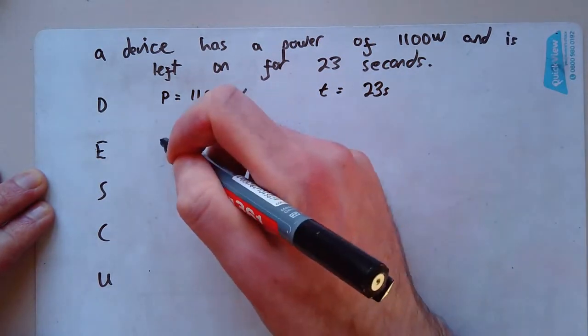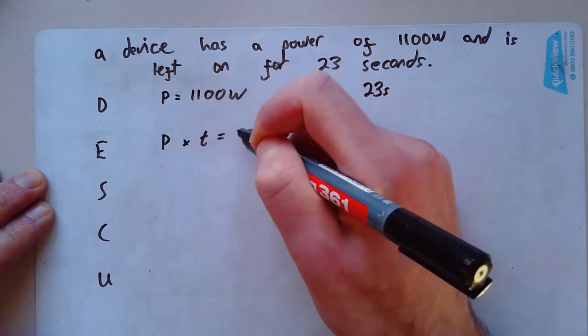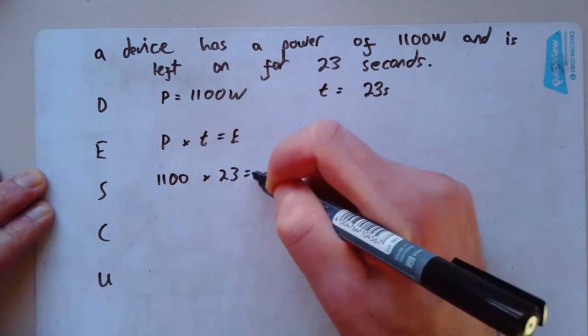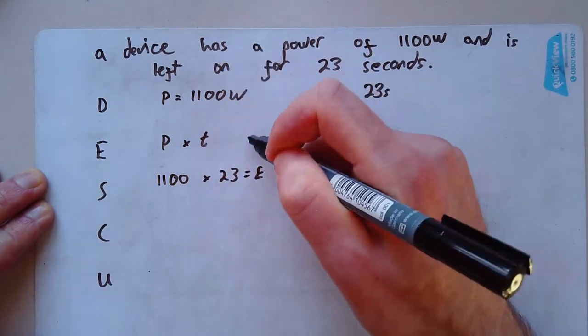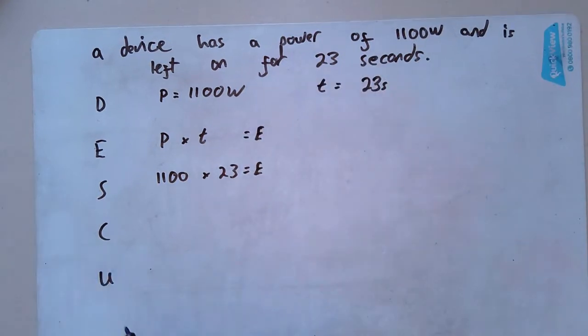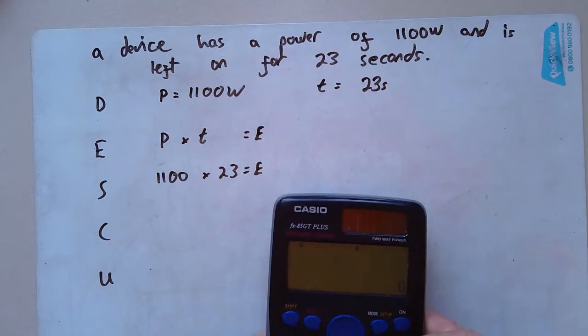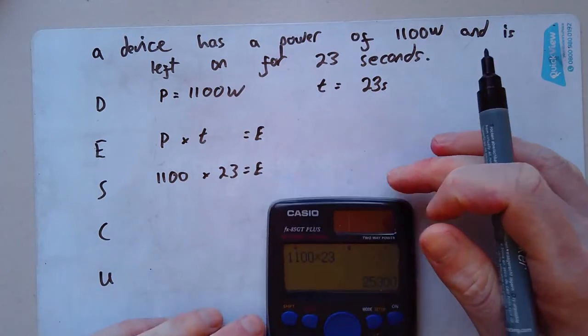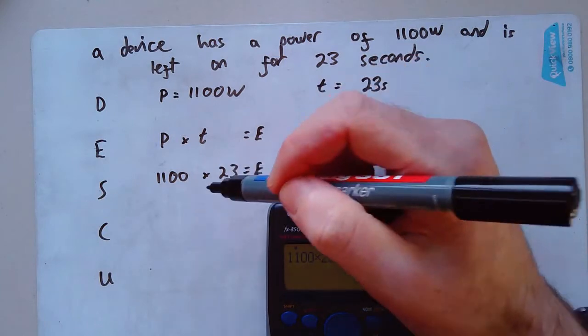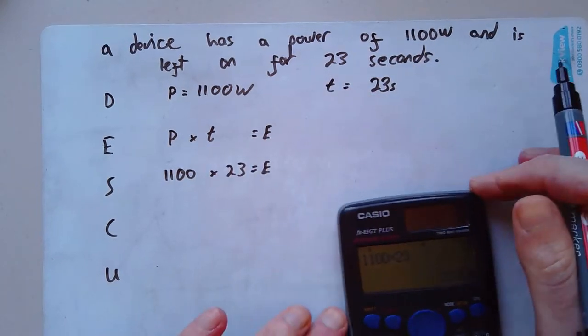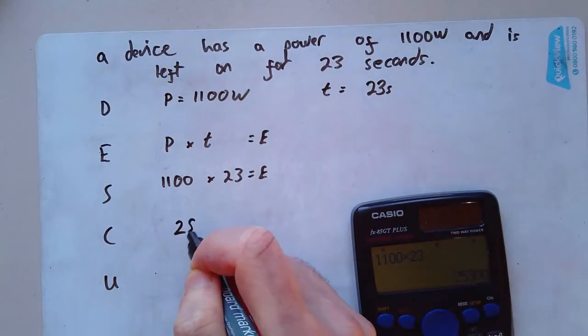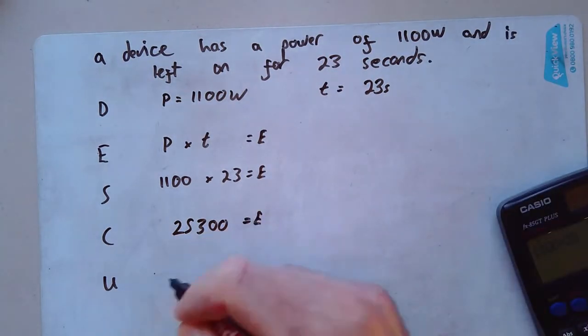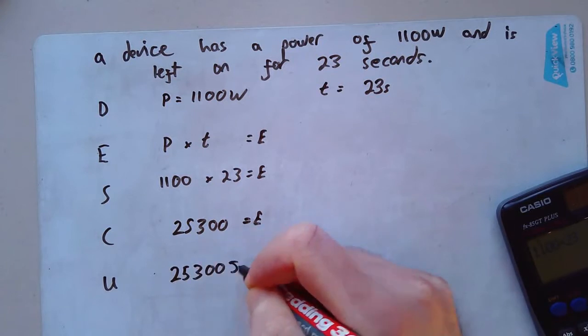My first step is where I write down the data, which is my P equals 1100 watts. And my T equals 23 s for seconds. I always write down my equation next. P times T equals E. S is for substitute 1100 times by 23 equals E. My C step is to calculate it. So I get my calculator. And you should always use a calculator in your science exam. It's 25300 equals E. And then your final step is to put your U, which is your unit, which is joules. And there we go. You've answered the question.